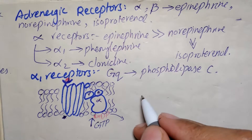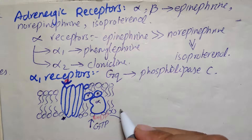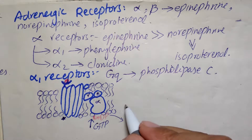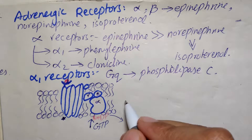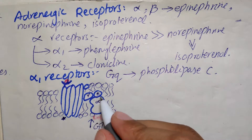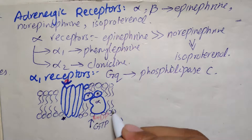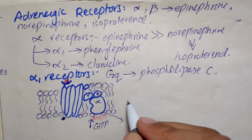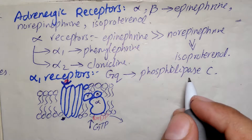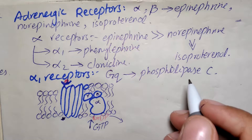The binding of GTP to the alpha subunit causes dissociation of the alpha-GTP complex from the beta and gamma complex, forming two separate complexes that can then interact with other cellular factors.